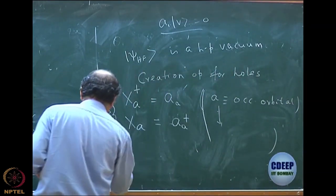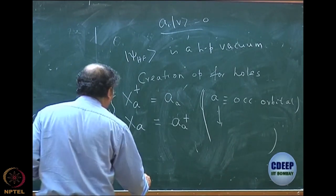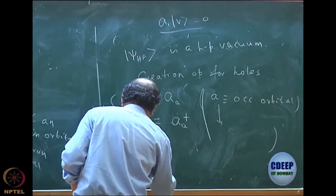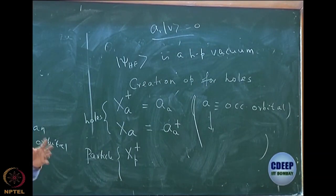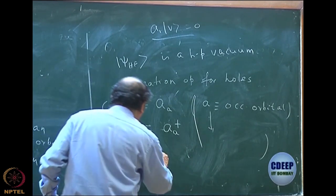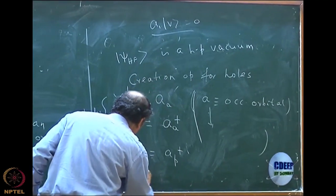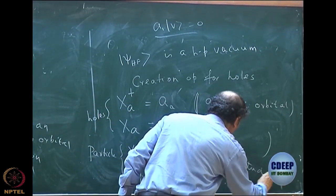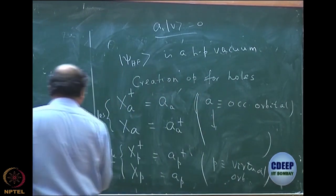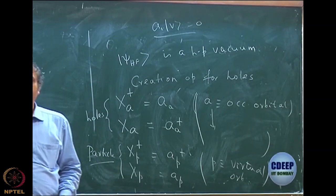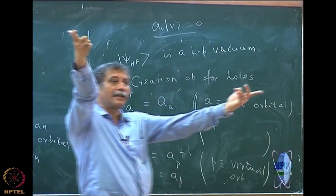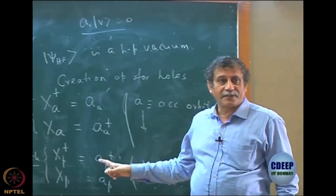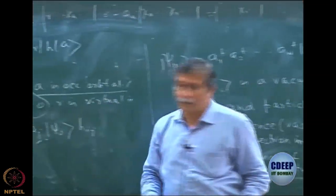Let me now define particles. For particles I am going to use virtual orbitals, because a particle is the presence of an electron in the virtual orbital. I write this as x_p dagger. I am using a, b, c, d for occupied orbitals and p, q, r, s for virtual orbitals. So x_p dagger equals a_p dagger, and x_p equals a_p where p is a virtual orbital. That becomes the creation and annihilation operators for particles, which are standard — x_p dagger equals a_p dagger because I am just creating an electron, so I am creating a particle.